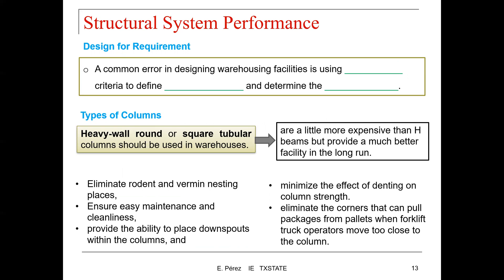A common error in designing warehousing facilities is using building cost criteria to define column spacing and determine the grid configuration — that is a major error, and those decisions should not be driven by cost. In terms of the types of columns, heavy wall round or square tubular columns should be used in warehouses. These are a little bit more expensive than H-beam but provide much better facility performance in the long run. They also eliminate rodent and vermin nesting places, ensure easier maintenance and cleanliness, provide the ability to place downspouts within the columns, minimize the effects of denting column strength, and eliminate the corners that can pull packages from pallets when the forklift truck operator moves too close to the column.